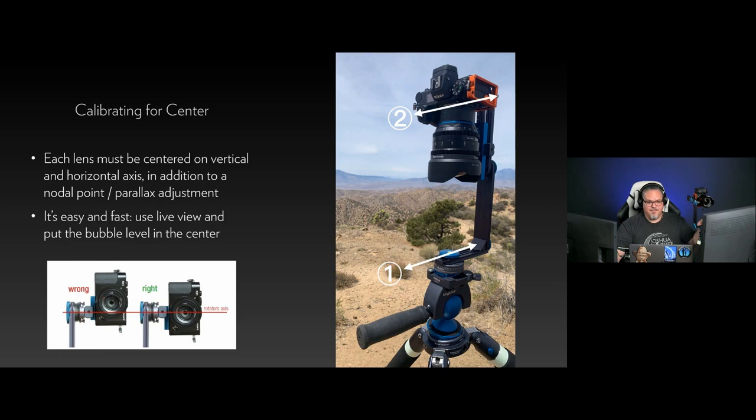You also need to calibrate to make sure your lens is dead center on the VR system slim. Your camera needs to be horizontally and vertically adjusted — it's really simple because you have those large blue knobs to move this in and out.